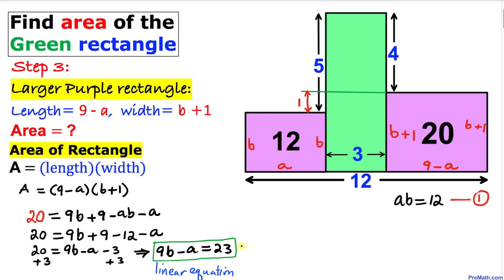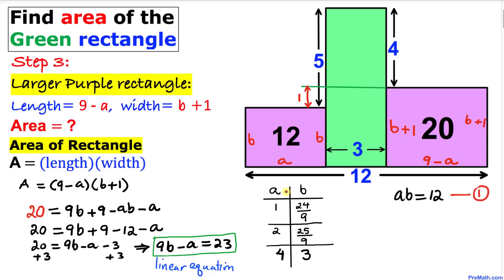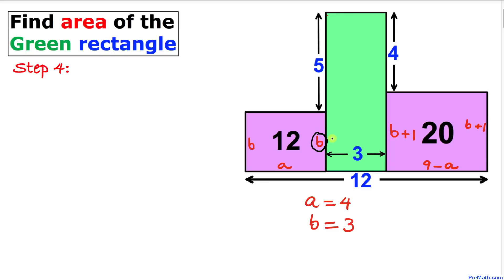This is a linear equation. Plotting a and b values on a t-chart, if a equals 1 we get a fraction — not a whole number. Continuing, at a equals 4 we get b equals 3, which are both whole numbers. So a equals 4 and b equals 3, meaning the width b is 3 units.